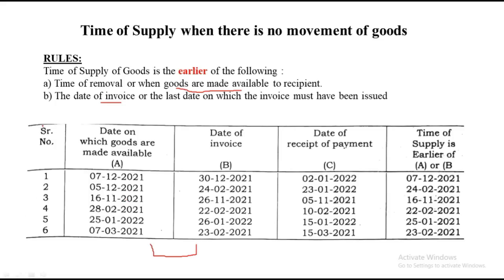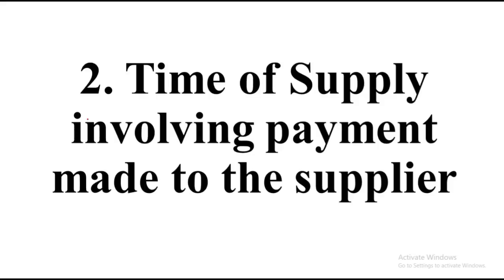That was the first type — when there is no movement of goods. The rule is: date when goods are made available vs. invoice date, whichever is earlier is your time of supply. Now we jump to the second type: time of supply involving payment made to the supplier.